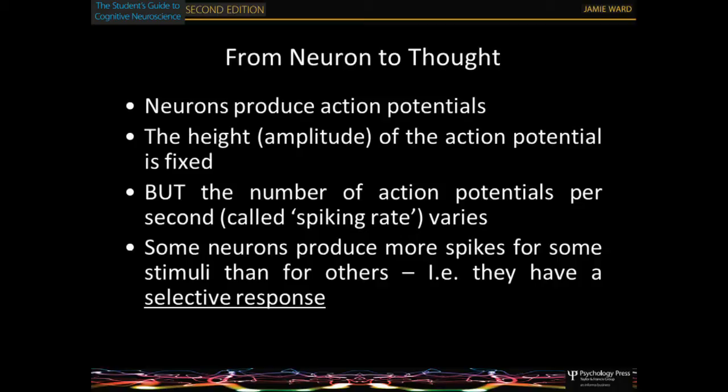To link this to cognition: the height of the action potential is fixed, but neurons can code information by varying their spiking rate. The key thing for understanding how neurons can support all these different functions is that neurons have functional specificity — they respond to something and not others. Different brain regions do different things, and taking it down to the level of neurons, different neurons in different brain regions respond to different things and code things in different ways.